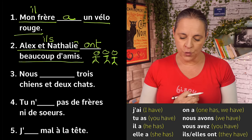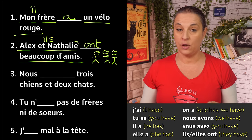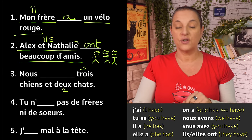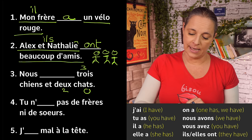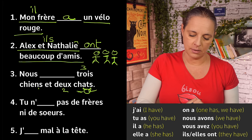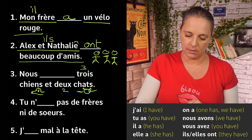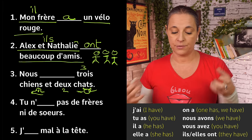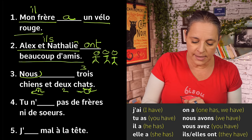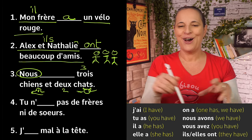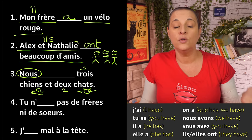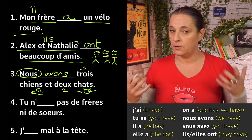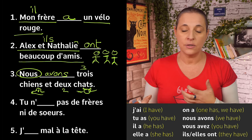Numéro trois: nous — something — trois chiens et deux chats. 'Chien' is a dog and 'chat' is a cat. If you look at your list, with 'nous' comes 'avons'. Nous avons trois chiens et deux chats — we have three dogs and two cats.